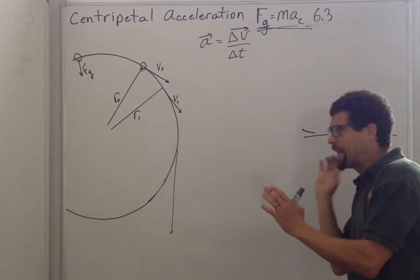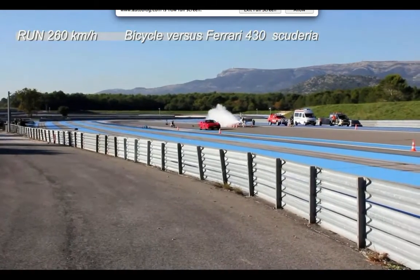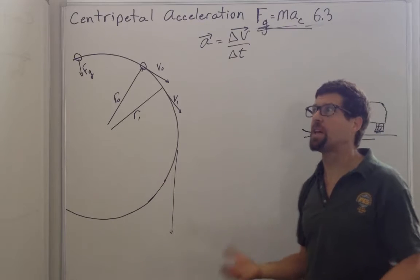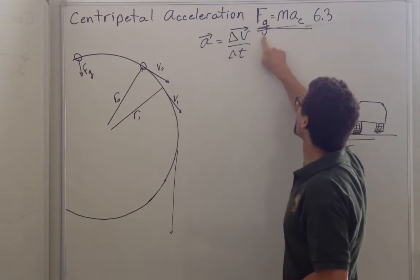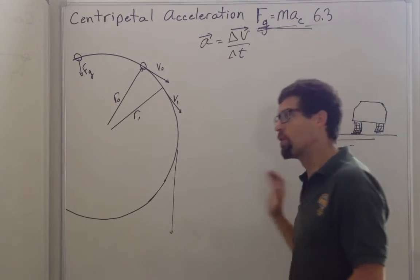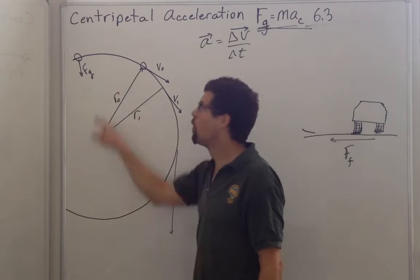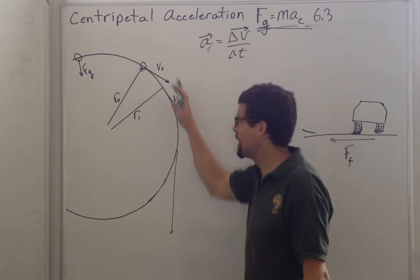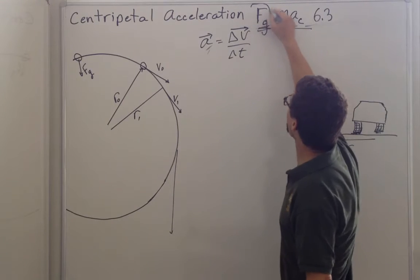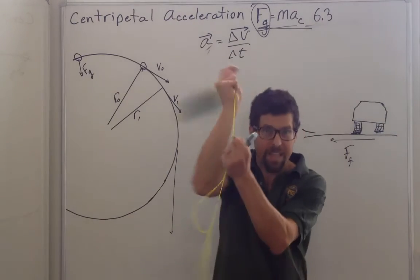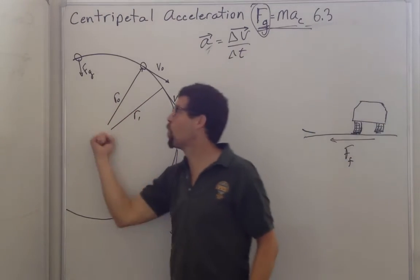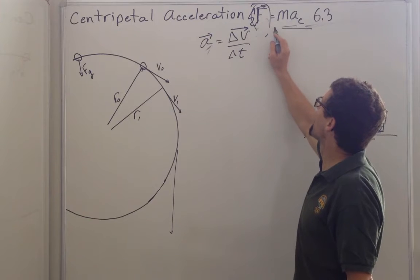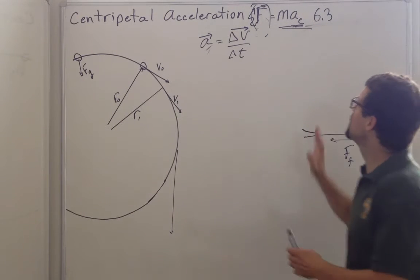If you see something accelerating in a straight line, like a car or a bike taking off, you don't say 'that's linear force.' You say it's accelerating and wonder what force is producing that acceleration — friction or a normal force. Likewise, when you see something moving in a circle, its velocity isn't constant, so you know there's centripetal acceleration. You then ask: what force causes it? It could be tension in a string, friction, or a vector sum of forces providing a net inward force.